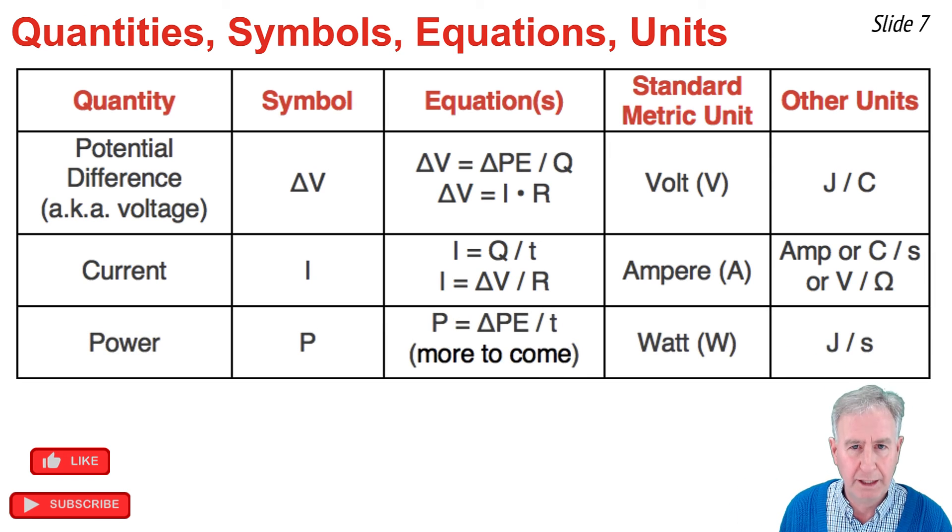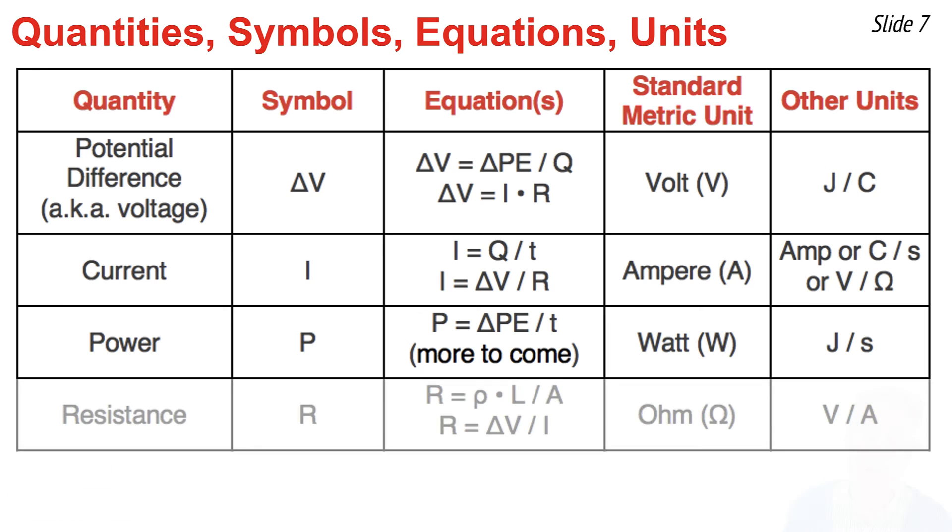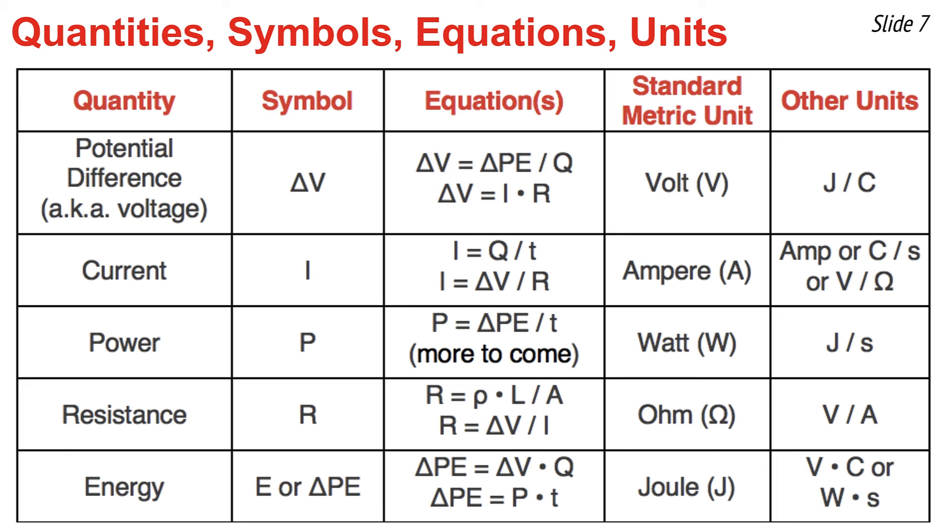Here's the power equations and symbols. P for power. One equation there. We're going to add many more as we go. Watt is the unit, and joule per second is an alternative. Here's resistance, discussed last video. The unit is the ohm, Greek letter omega, sometimes volt per amp. And finally, energy. A couple of equations there. The joule is the unit. Several other options for units are given as well. Use this slide, take a screenshot now, and use it in your circuit studies.